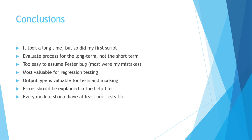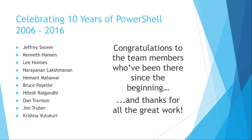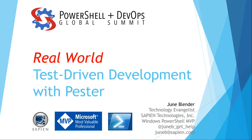The errors should be explained in the help file — it's really important to document errors and not have users try to figure out what errors they might encounter. Every module should have at least one test file. This talk was reviewed by Dave Wyatt twice. I owe a huge debt of gratitude to the people who went before me, including Jakub Jareš and Mike Robbins, who wrote great articles about Pester. We're celebrating 10 years of PowerShell, and this was real-world test-driven development with Pester. Thank you for coming.